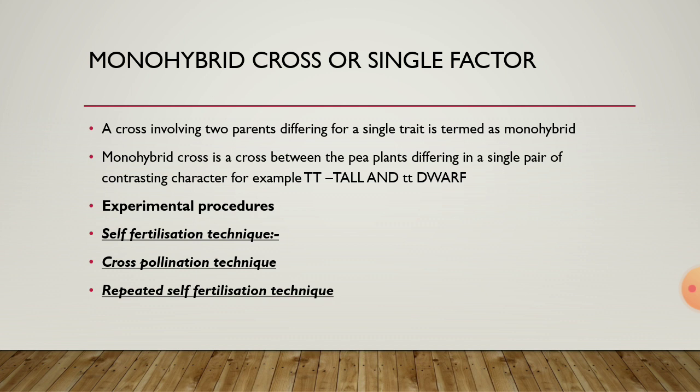For example, capital T and capital T is used for tall height of plant, and small t and small t is used for dwarf. Some experimental procedures are mentioned here, like self-fertilization technique. Mendel used self-fertilization technique to acquire a plant with pure character for tallness. Mendel fertilized a tall pea plant for many generations until the resultant offspring always produced only tall plants. In the same way, he obtained a dwarf variety called parent generation plants. In cross-pollination technique, Mendel took two varieties of pea plant differing in a pair of contrasting characters, namely tallness and dwarfness of the stem.